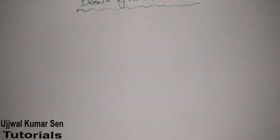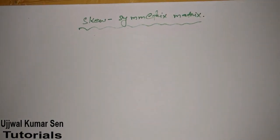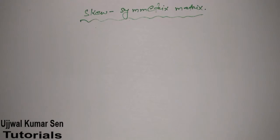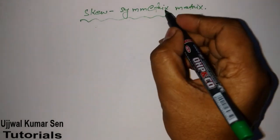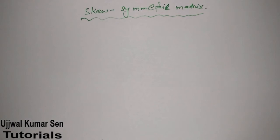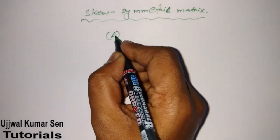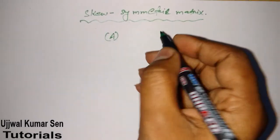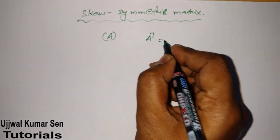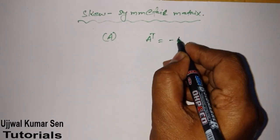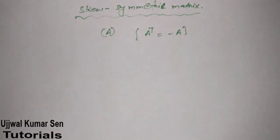This is Uchul Kumarsen and in this video tutorial you are going to learn about skew symmetric matrix. So what is basically a skew symmetric matrix? Suppose that we have given a matrix A, and when the transpose of this matrix is equal to minus A, it is known as a skew symmetric matrix.